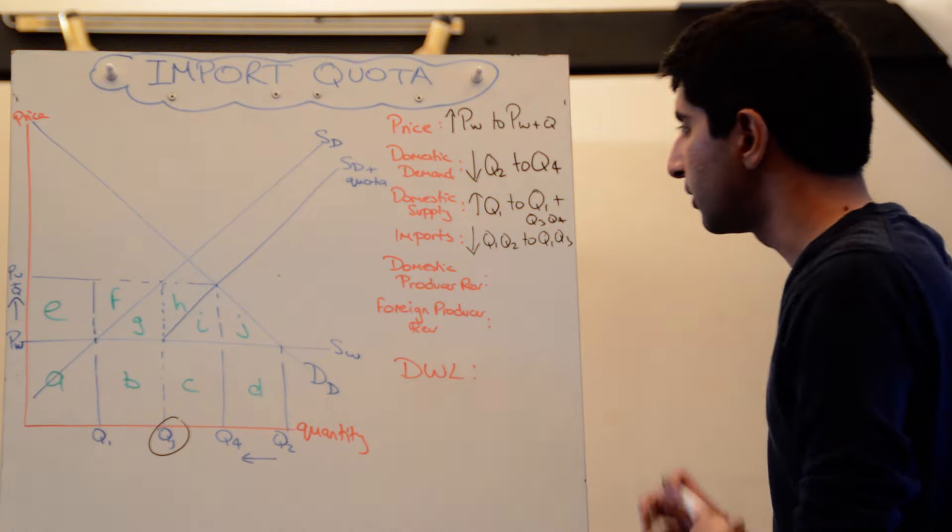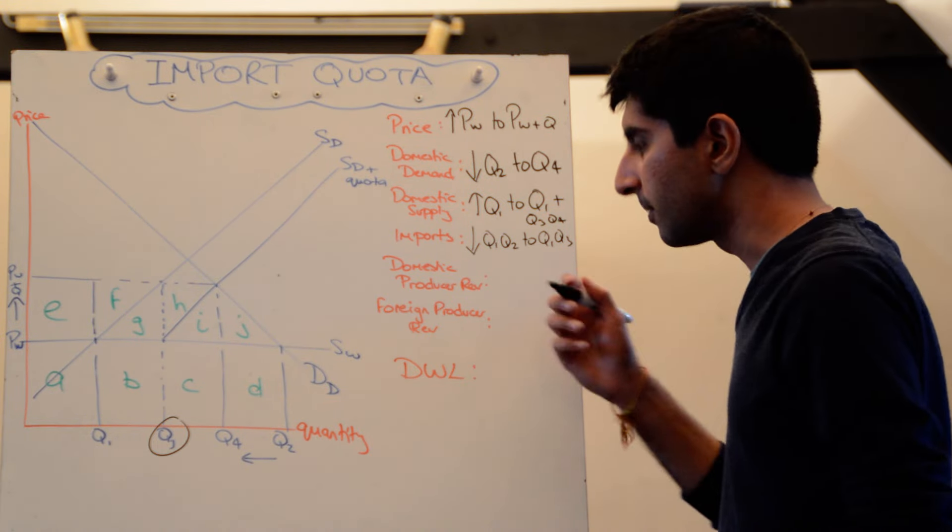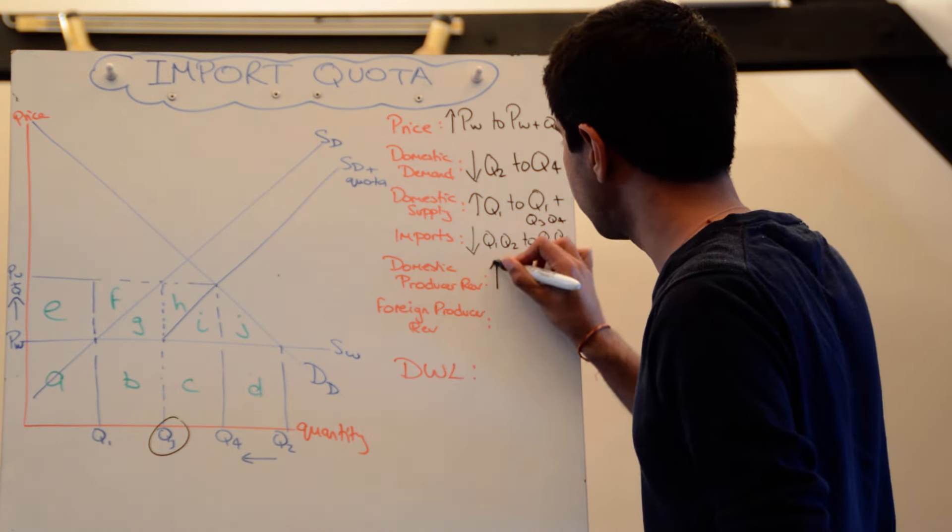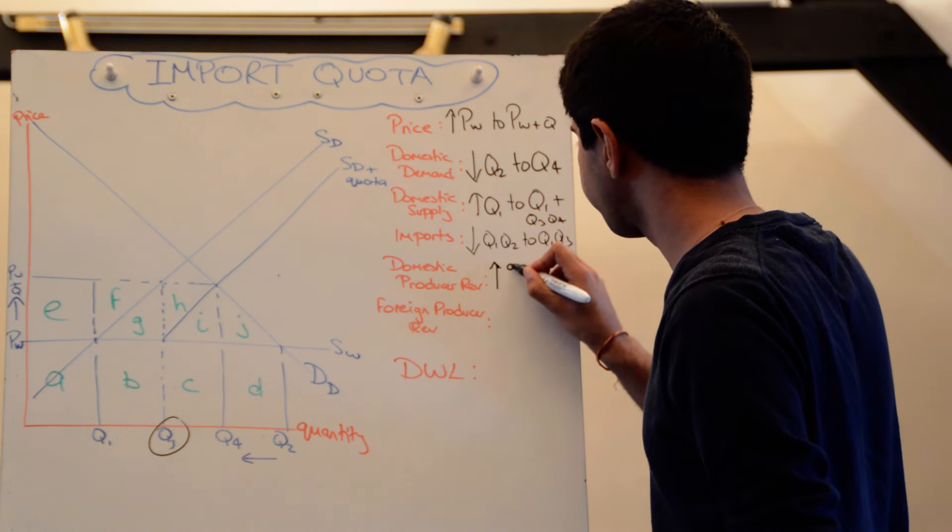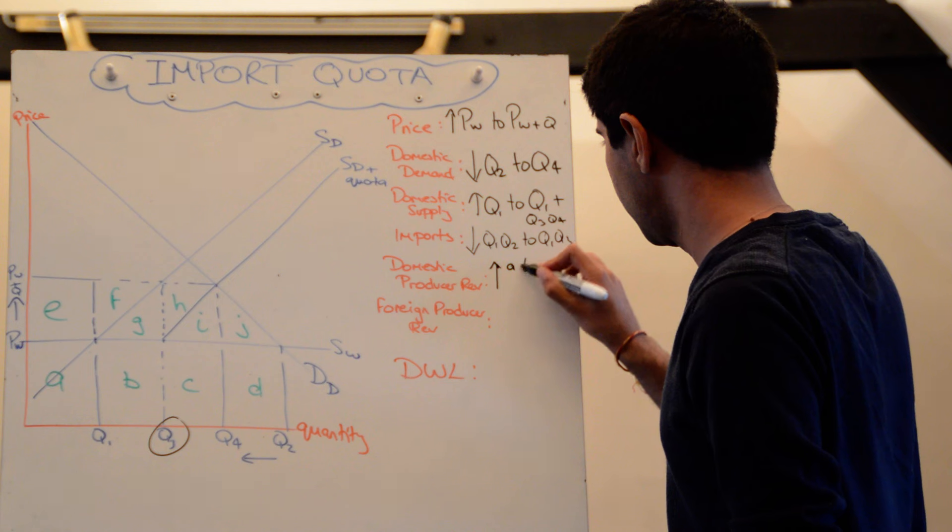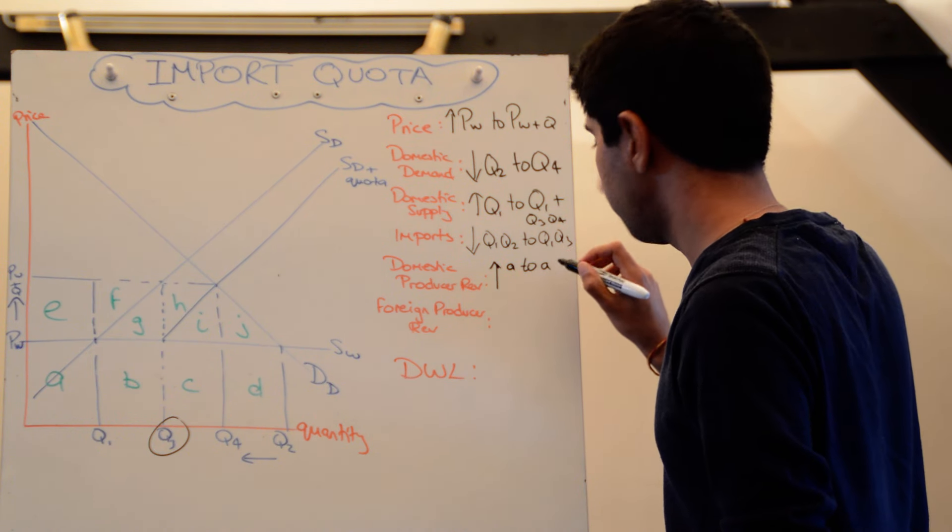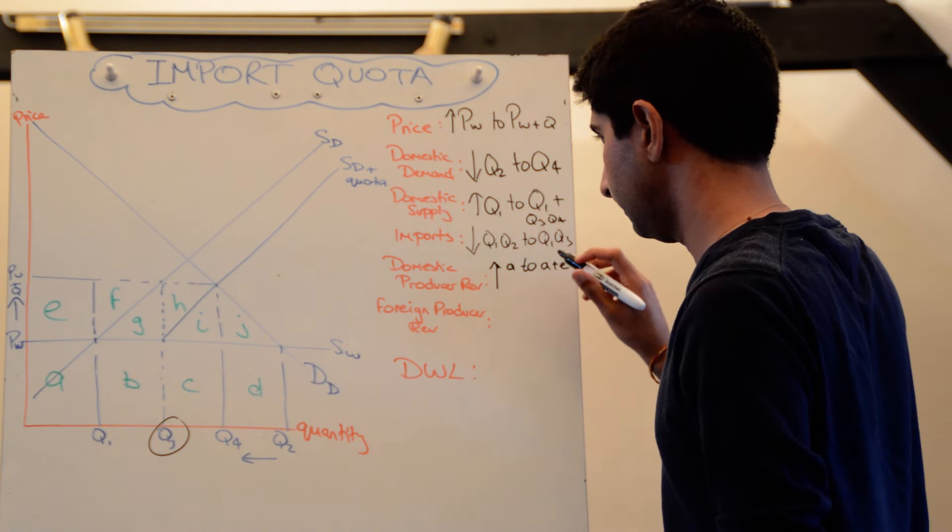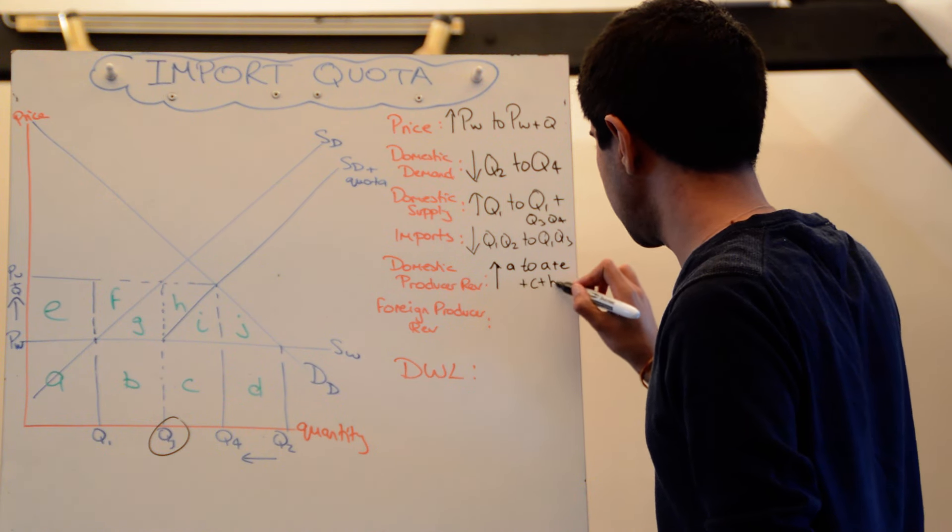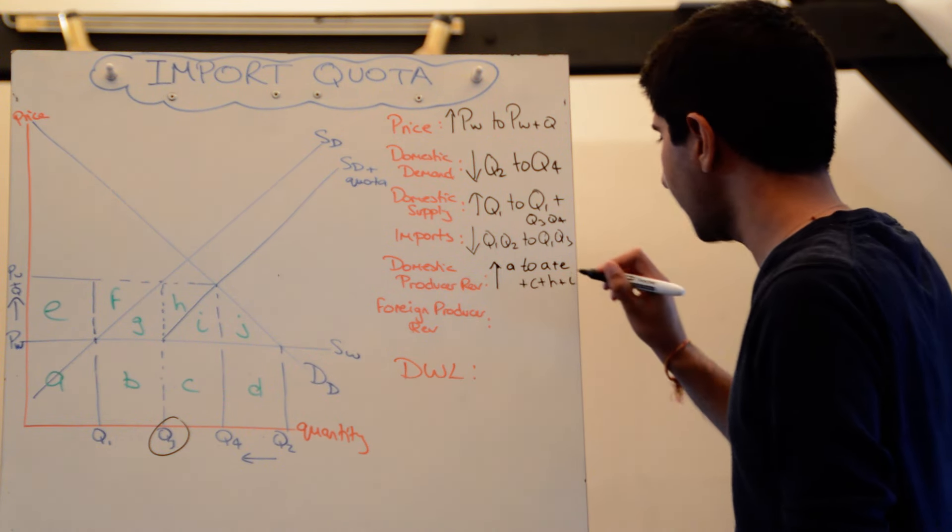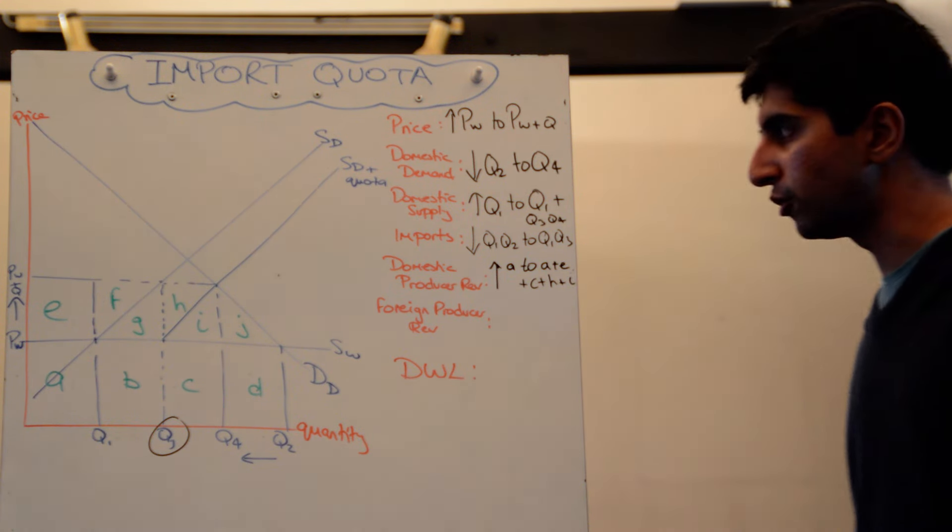So producer revenue, domestic producer revenue, has increased substantially. So it was previously just A. Now it's A plus E plus C plus H plus I. So substantial increase in domestic producer revenue.